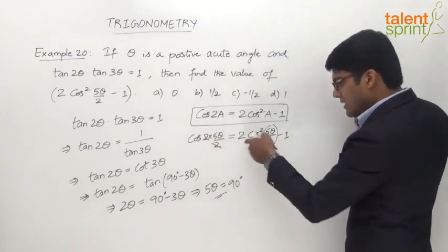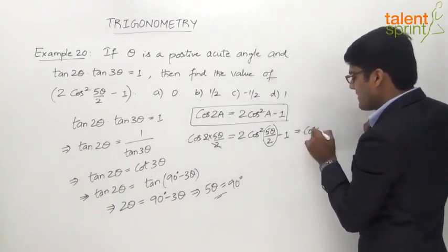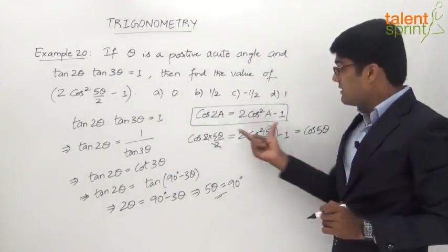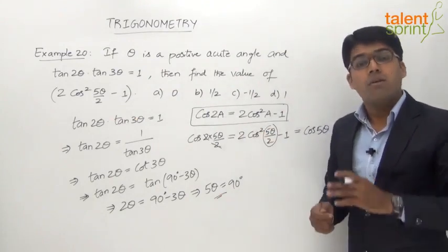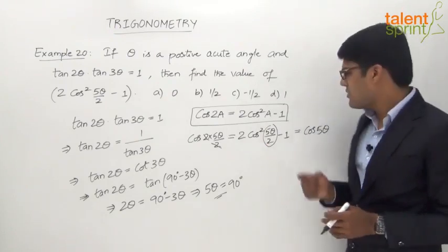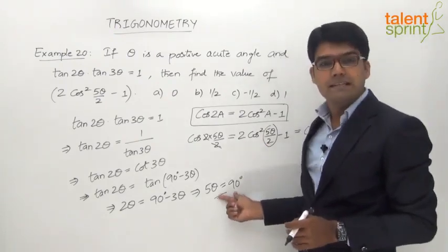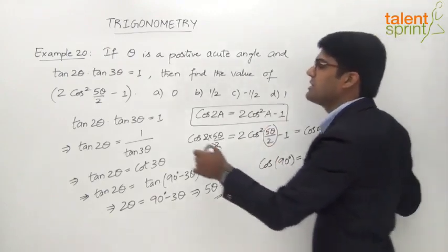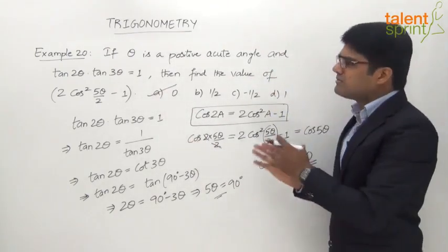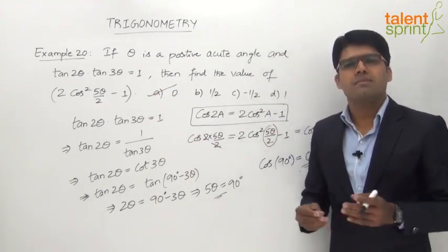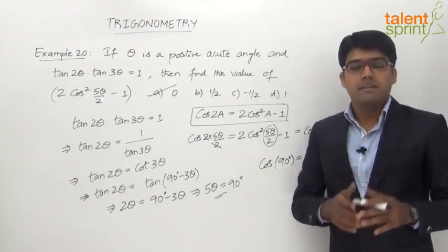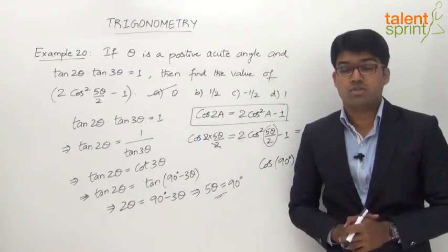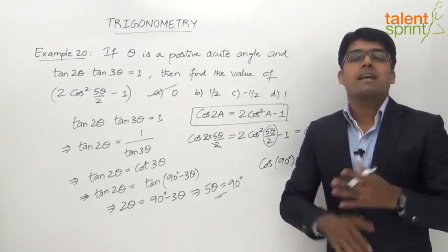So 2 cos square 5 theta by 2 minus 1 equals cos 5 theta, using the double angle identity cos 2a = 2 cos square a minus 1. Since we already found that 5 theta equals 90 degrees, cos 5 theta equals cos 90 degrees, which is 0. Hence the answer is option A: 0. Remember all the various trigonometric formulas by heart, because you never know which formula will come in handy during the exam.